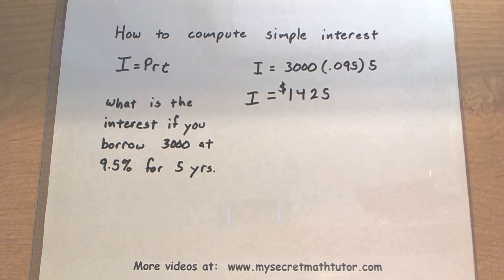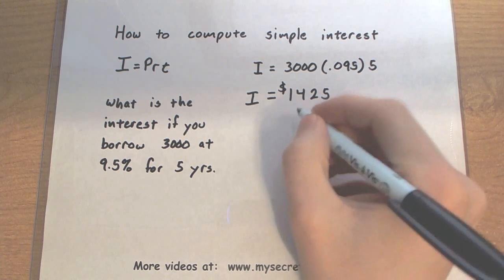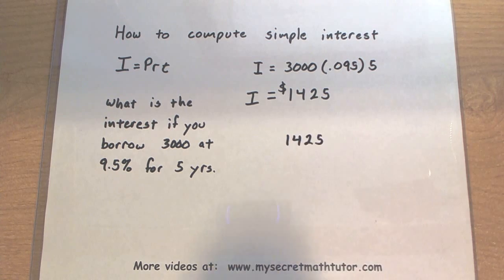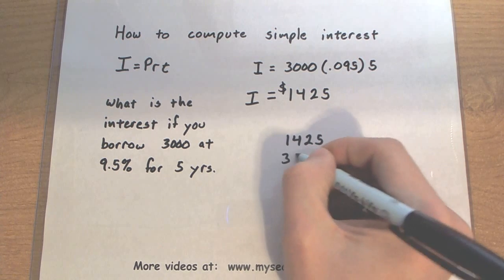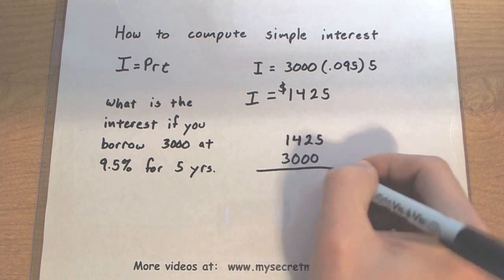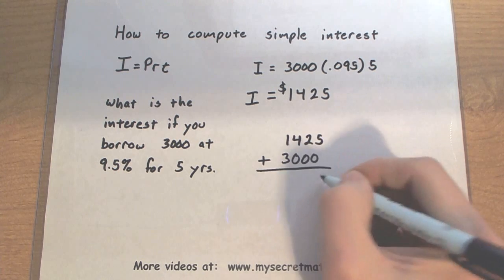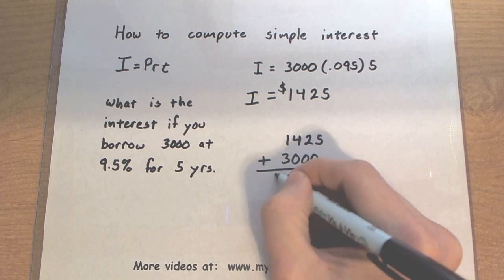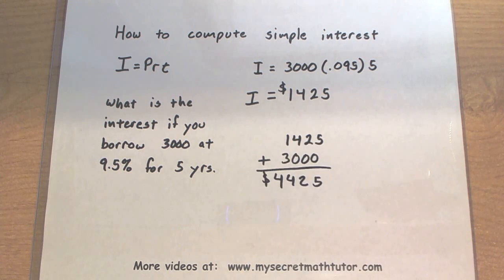If you wanted to take this one step farther and actually figure out the total amount that you will have to pay back, it would be the interest and then add it to what was borrowed. That gives you a total of $4,425. So we would end up paying back a total of $4,425.